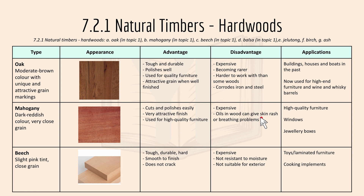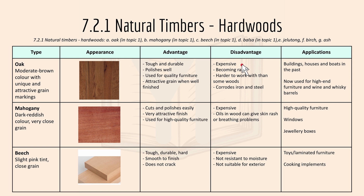Moving on to 7.2.1 hardwoods. We'll start off with oak, which is a moderate brown color with unique and attractive grain markings. The advantage is that it's tough and durable, it's used for quality furniture, and it has an attractive grain when well finished. The disadvantage is that it's expensive and becoming rarer. Applications include building houses and boats in the past, but now it's used for high-end furniture.